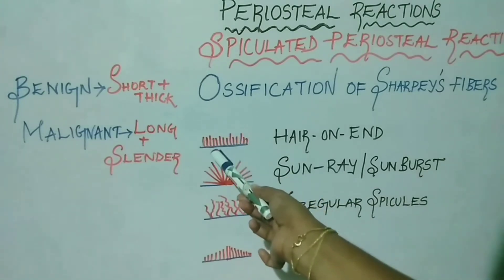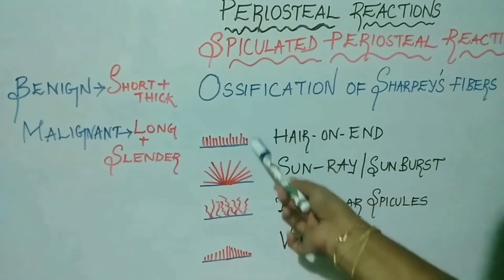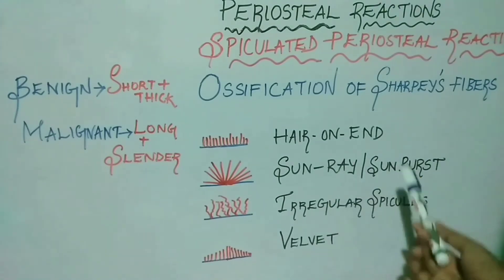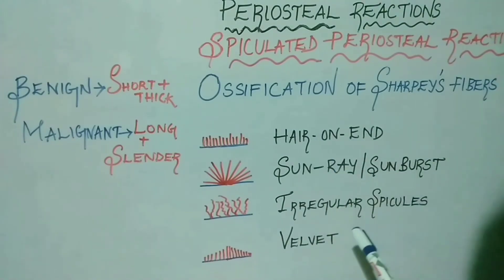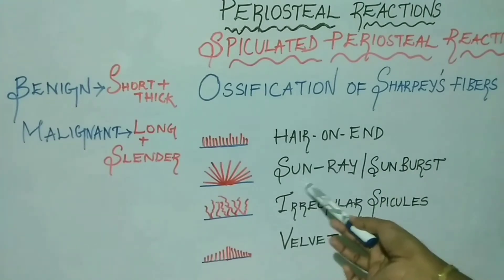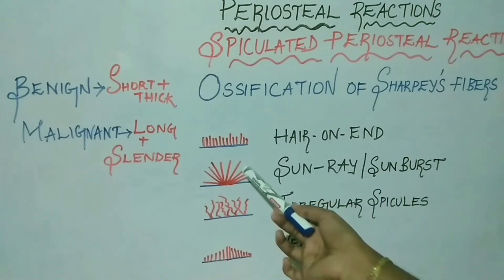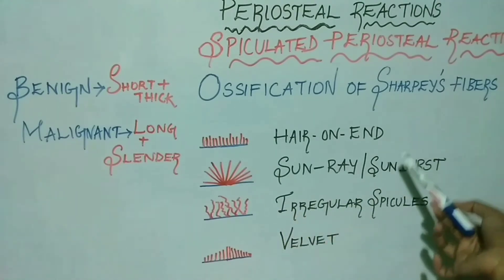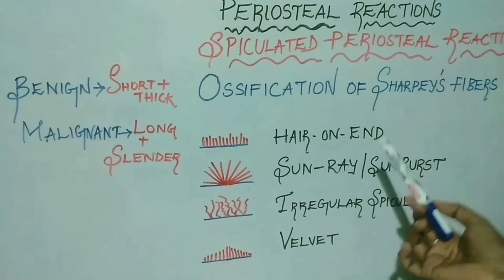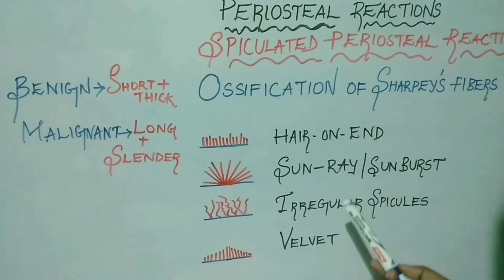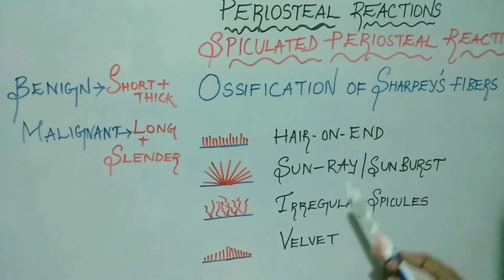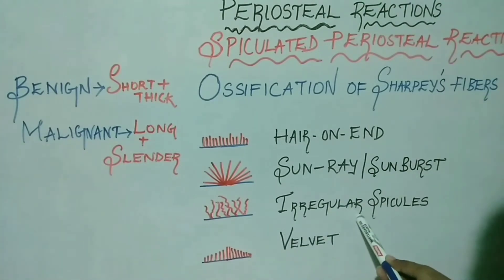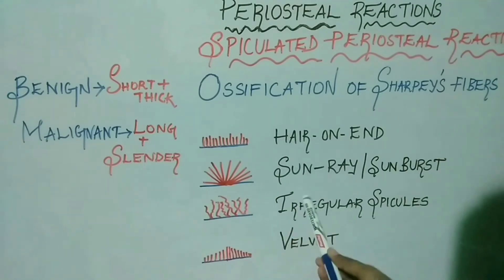In the hair-on-end pattern, bony spicules are arranged parallel to each other. This appearance is seen in osteosarcoma, Ewing sarcoma, sickle cell anemia, and thalassemia. In the sunburst or sunray pattern, bony spicules are divergent in nature. This pattern is mostly noted in osteosarcoma, chondrosarcoma, fibrosarcoma, Ewing sarcoma, osteoblastoma, and hemangioma.